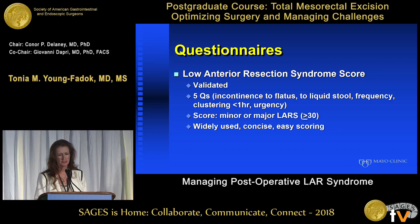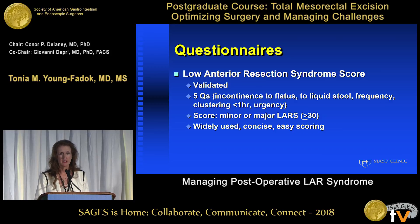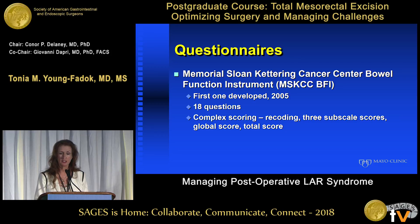The LARS score is a validated questionnaire of just five questions pertaining to flatus, liquid stool, frequency, clustering, and urgency. It allows classification into either minor LARS or major LARS, with the cutoff point being below or above 30. It's widely used and concise, as opposed to an alternative questionnaire developed in 2005 which has complex scoring with different subscales and total scales, making it less widely used.